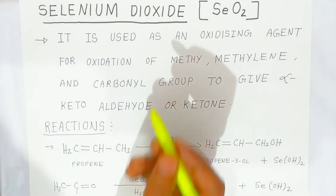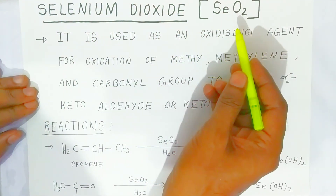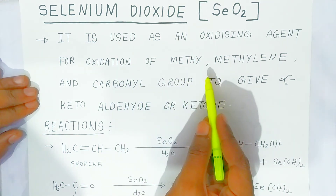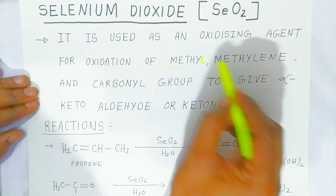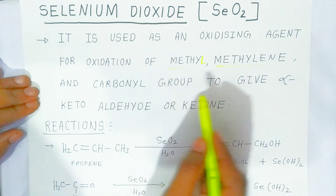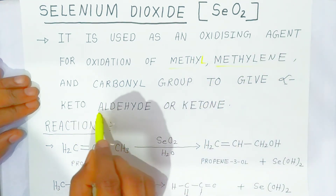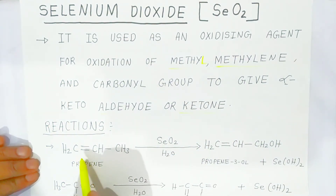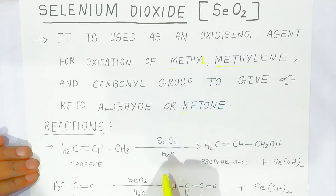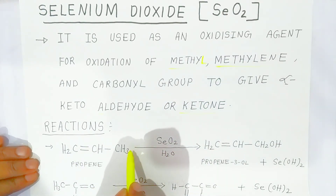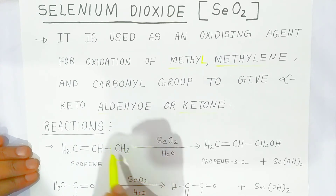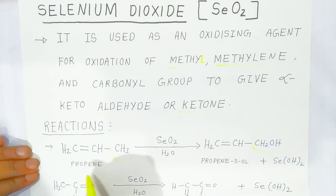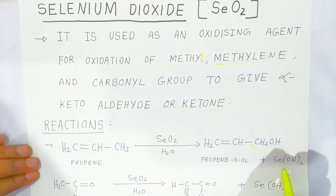The next type of oxidizing agent is selenium dioxide, SeO2. It is used as an oxidizing agent for the oxidation of methyl and methylene groups adjacent to a carbonyl group, to give alpha-keto aldehyde and ketone. For example, propene — selenium dioxide will not oxidize the double bond part; it will oxidize the methyl part adjacent to the double bond, converting it to an alcohol. So propene is converted into prop-2-en-1-ol and selenium dihydroxide.